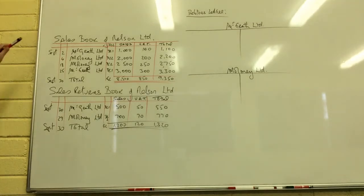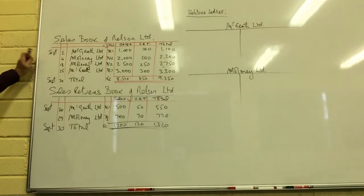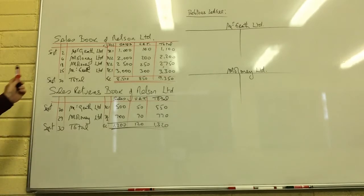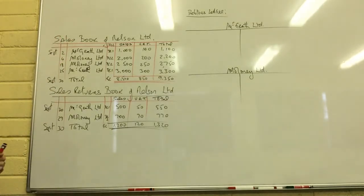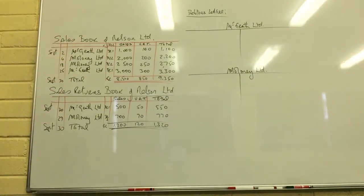Here we are looking at the sales day book and the sales returns book of Nelson Limited. These are the two books of first entry, and I'm going to post or transfer those entries from the books of first entry into the ledger — posting the sales day book and the sales returns book.